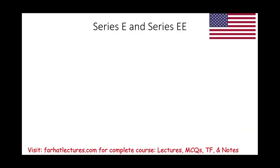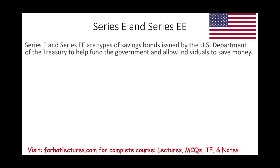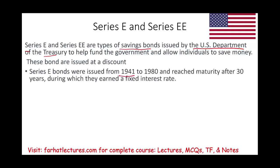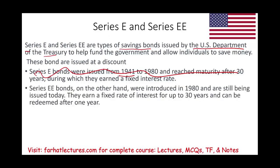Good news for Series E and Series EE bonds: Series E and Series EE are types of savings bonds issued by the U.S. Department of the Treasury to help fund the government and allow individuals to save money. Rather than giving your money to a bank, you can buy these original issue discount bonds from the government. Series E were issued from 1941 to 1980 with a 30-year maturity and are now gone. Series EE were introduced in 1980 and are still issued today, earning a fixed rate of interest up to 30 years and redeemable after one year if you choose.